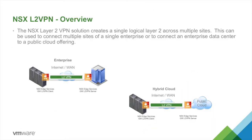So what is NSX L2 VPN? It's a feature in NSX Edge where you can use it to create a single logical layer 2 network across multiple sites. You could have multiple data centers in your enterprise that you'd like to connect, or you could be using it to connect your on-prem data center to a public cloud offering over the internet or WAN connection.